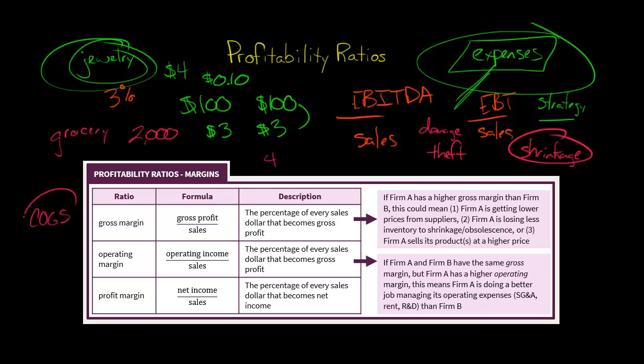If you're a manufacturer, cost of goods sold tells you about the cost of manufacturing the inventory, because you're building it yourself rather than buying it. So gross margin for a manufacturer reflects not just shrinkage and damage, but also the cost of manufacturing — things like consolidating manufacturing facilities, operating at full capacity, and keeping manufacturing overhead down.